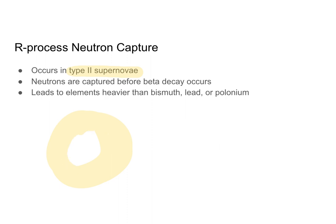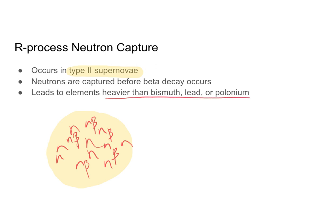The star captures a neutron, then another neutron, and another, and another — capturing multiple neutrons rapidly. Then beta decay starts occurring, and the star is still capturing neutrons before beta decay is finished. The extra energy going into the star means it is able to create elements that are heavier than bismuth, lead, or polonium. So we're able to have even more fusion reactions going on within our star when we have rapid process neutron capture.